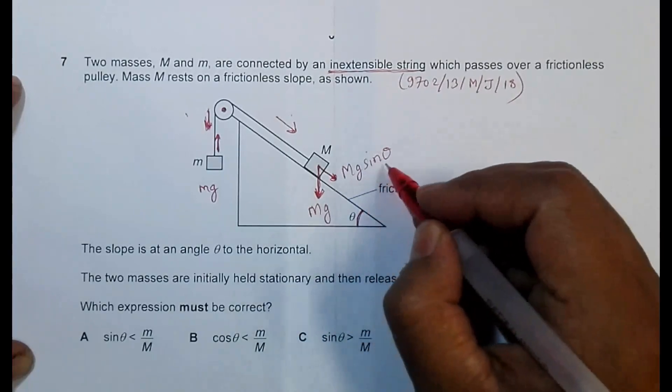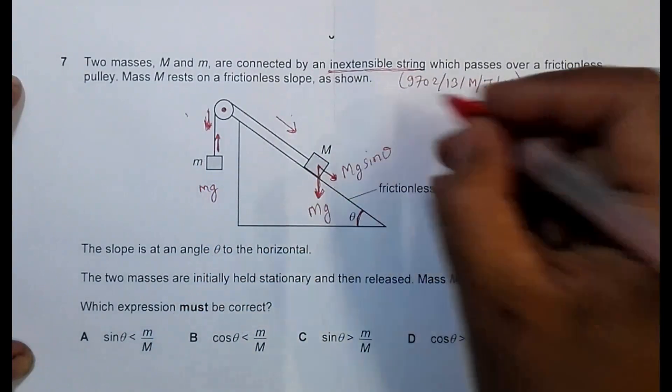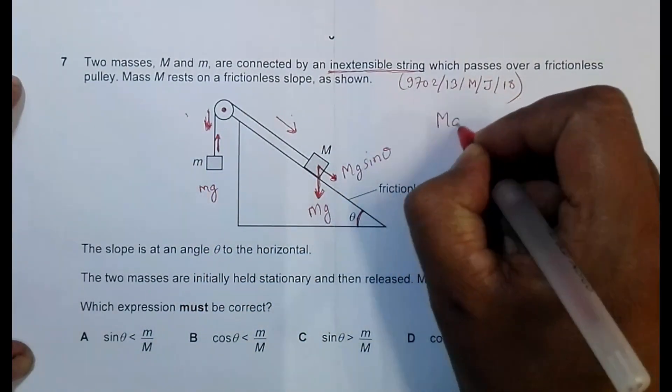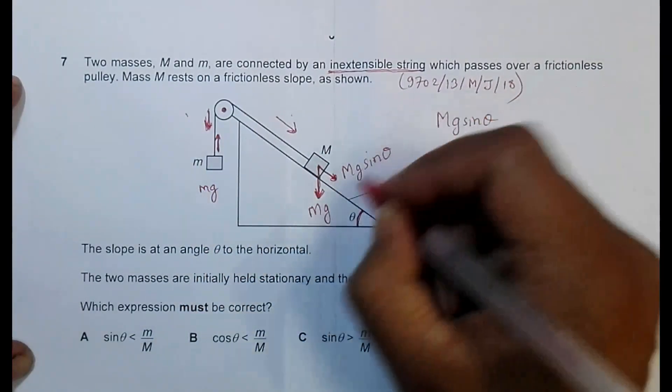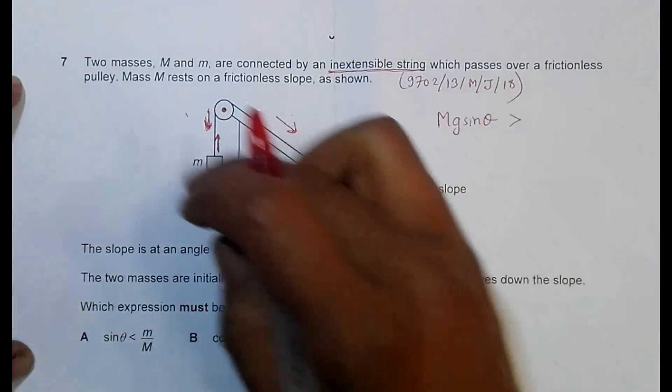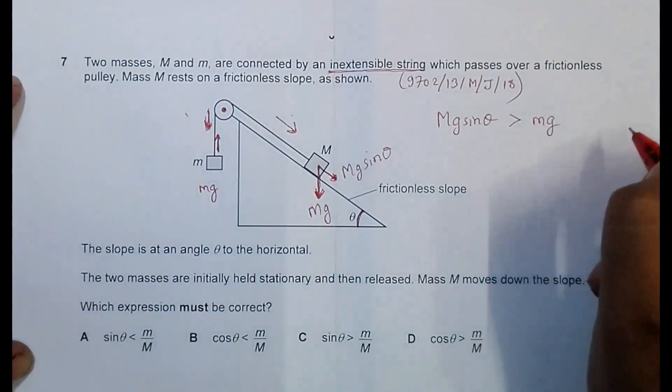So MG sine theta and here MG. So if it is moving downward, we must have MG sine theta, which is this force, should be more than this MG.